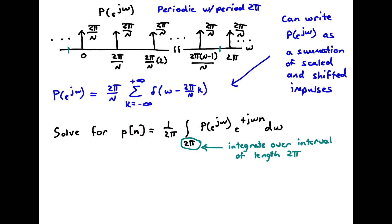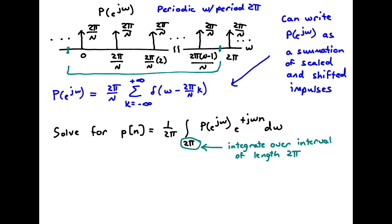We can solve for p(n) — the inverse transform — by taking the inverse transform integral. That integral is defined as 1/(2π) times the integral of P(e^jω) times e^(jωn) dω, integrating with respect to the radian frequency variable. We can integrate over any interval of length 2π because this is periodic with period 2π, so we can pick any such interval — for example, one of length 2π as shown.